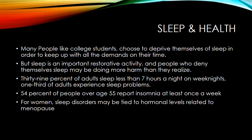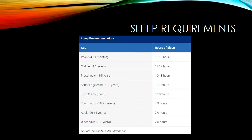Fifty-four percent of people over the age of 55 report insomnia at least once a week. As a person ages, there are more and more chances of sleep problems. For women, sleep disorders may be tied to hormonal levels related to menopause. A chart shows the sleep requirements as provided by the National Sleep Foundation throughout the lifespan, from infancy to older adulthood.